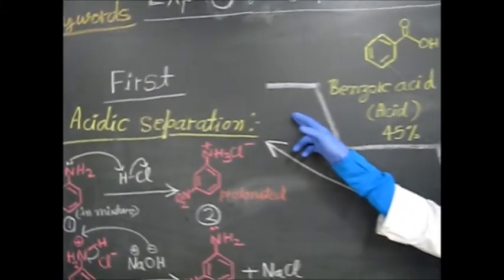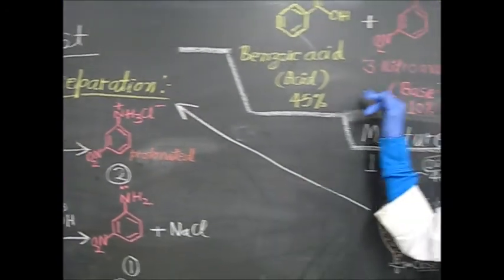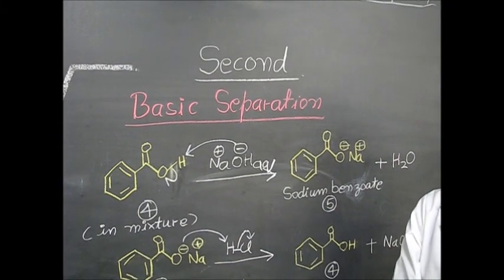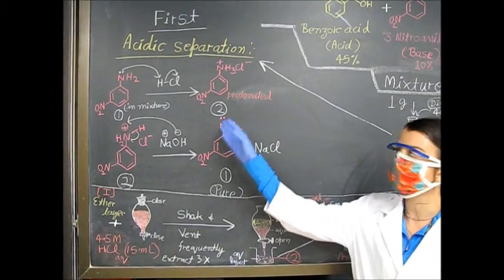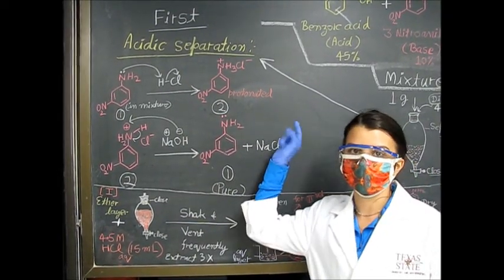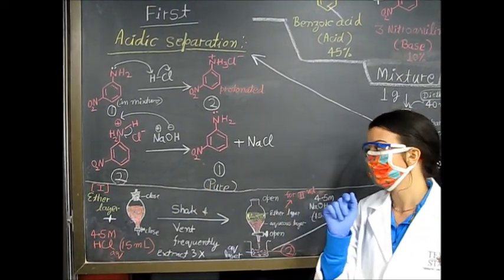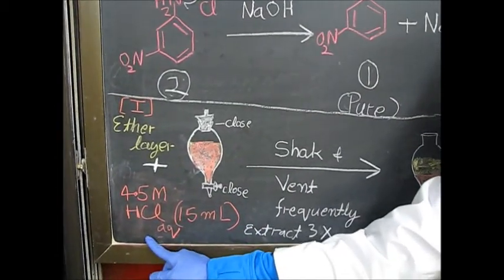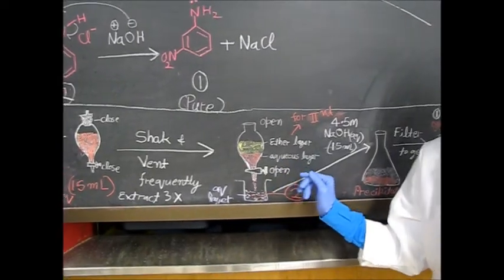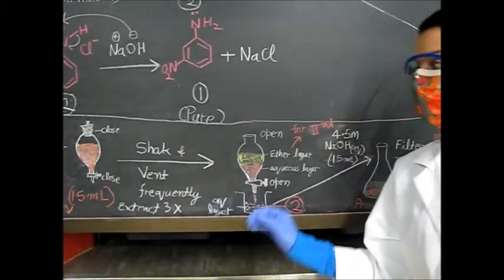The first step of this extraction is going to be an acidic separation. We will be using HCl to separate out the 3-nitroaniline compound, which is a base. The second step is a basic separation — we will be using NaOH to extract out the benzoic acid from the solution. In the acidic separation, we will be adding HCl into our mixture, which will protonate the nitroaniline. Once protonated, it is soluble in aqueous conditions. We add 15 milliliters of 4.5 molar HCl, shake the separatory funnel, and invert it to release pressure. We will then extract the bottom aqueous layer, repeating this procedure three times with three sets of 15 milliliters of HCl to ensure all of the compound was protonated.